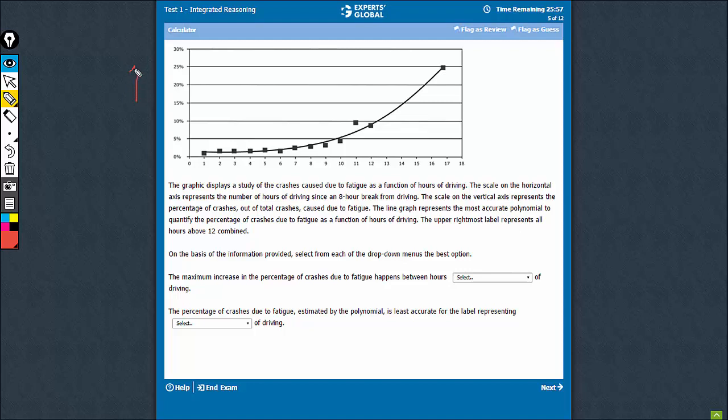On the y-axis, we have the percentage of crashes. On the x-axis, we have the hours of driving since the last proper sleep. In this question, the maximum increase happens in the hours of driving between this value and this value. Here, it is the maximum percentage increase.